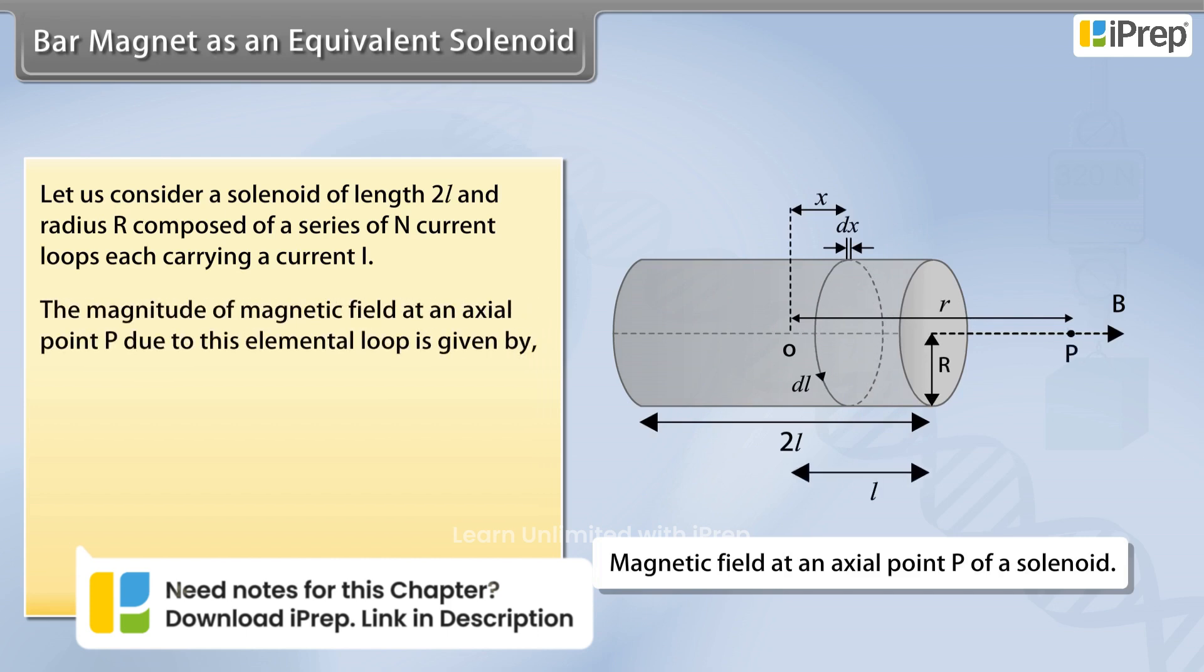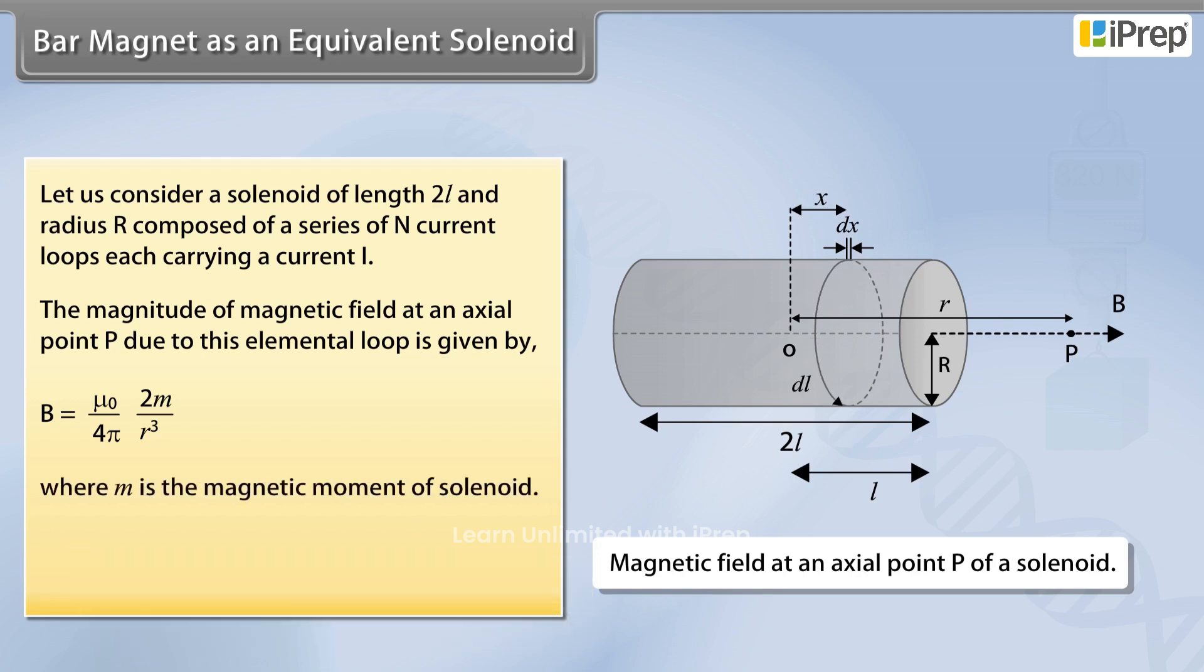The magnitude of magnetic field at an axial point P, due to this elemental loop, is given by μ₀/4π × 2m/R³, where m is the magnetic moment of the solenoid. This is exactly the same as that of a bar magnet at a far off axial point.